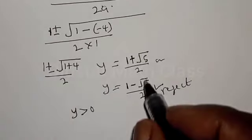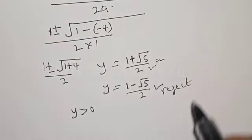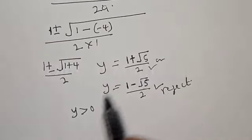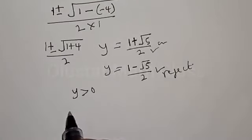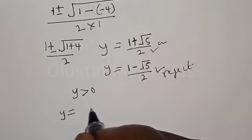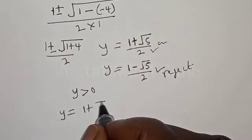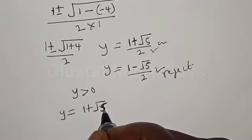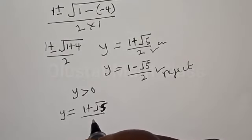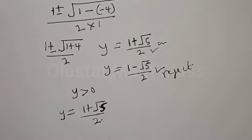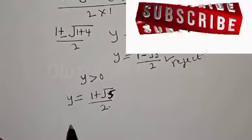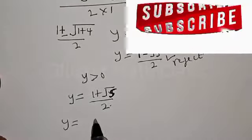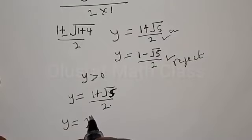We work on the real value of y, which is 1 plus square root of 5 over 2. Therefore, y is equal to 1 plus square root of 5 divided by 2. And we know that y is equal to 2 raised to power m.